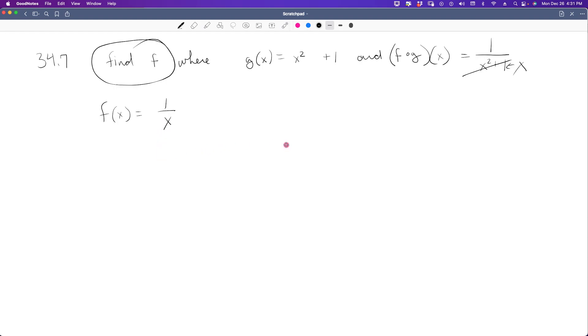There's only one solution there. That's all that's possible because of what g of x is equal to. It was just substituted in for the x in the f function. So those are pretty straightforward and fairly easy to see once you understand what you are looking for.